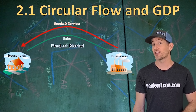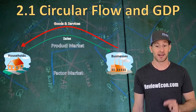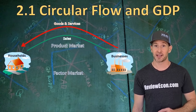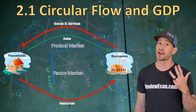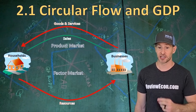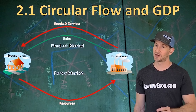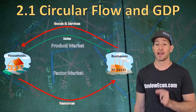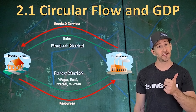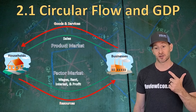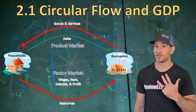We also have another market called the factor market. In the factor market, resources — land, labor, capital, and entrepreneurship — are going from the households to the businesses. And businesses are providing those households with wages, interest, rent, and profit.